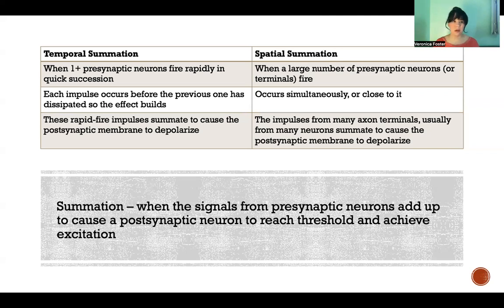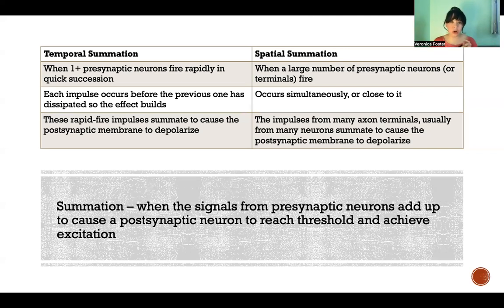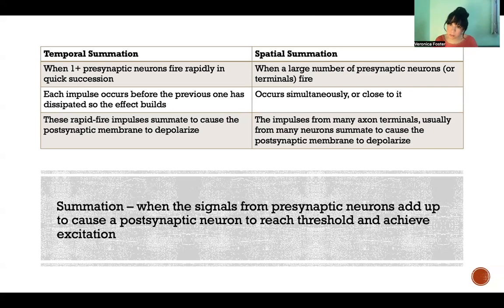The difference is that in temporal summation, it's a matter of time and how close together those action potentials are occurring. And in spatial summation, it's a matter of number — how many presynaptic neurons or presynaptic terminals are firing all at once.